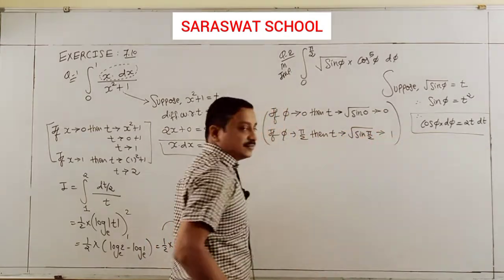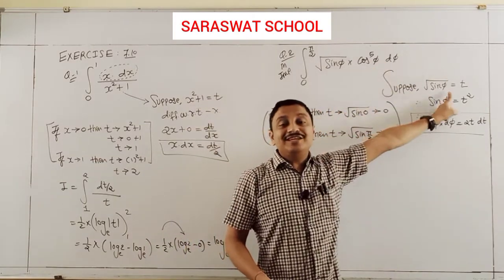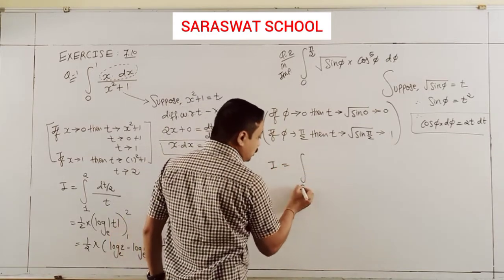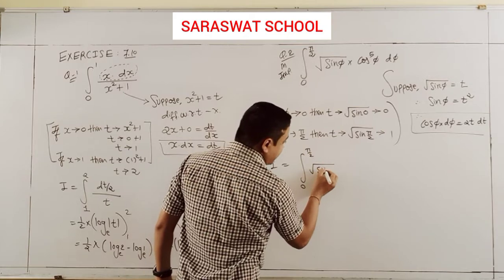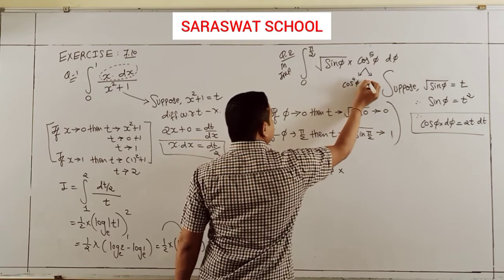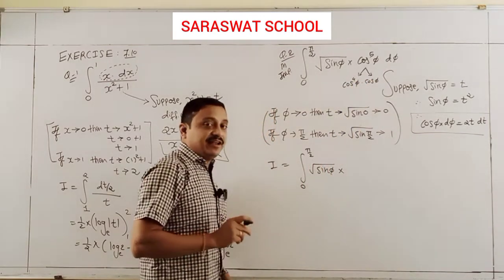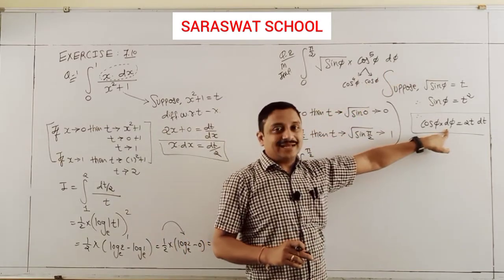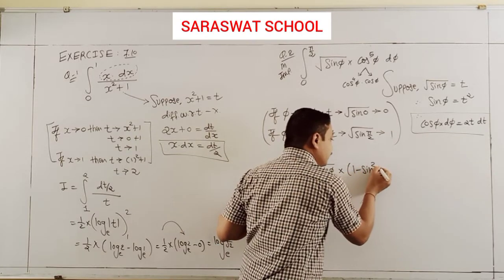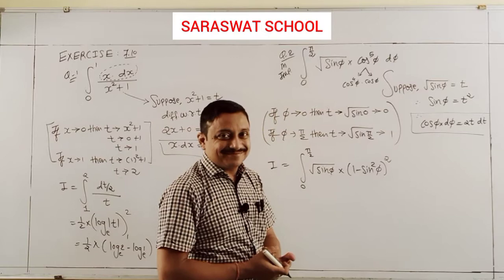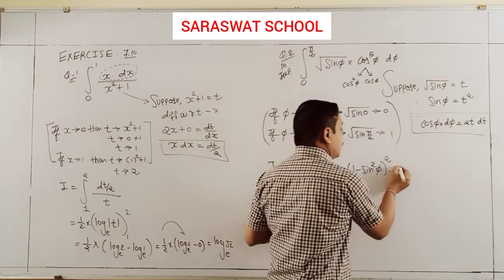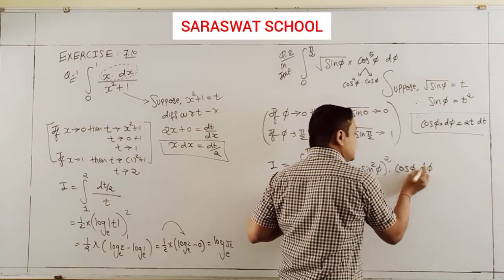So φ variable now changes to t dt. In the integral, √sinφ is t, and cos⁴φ can be written as (1 - sin²φ)², which is (1 - t⁴) squared. And cosφ dφ becomes 2t dt. So the integral from 0 to 1 becomes t times (1 - t⁴)² times 2t dt, expanding to 2t² times (1 - 2t⁴ + t⁸) dt.